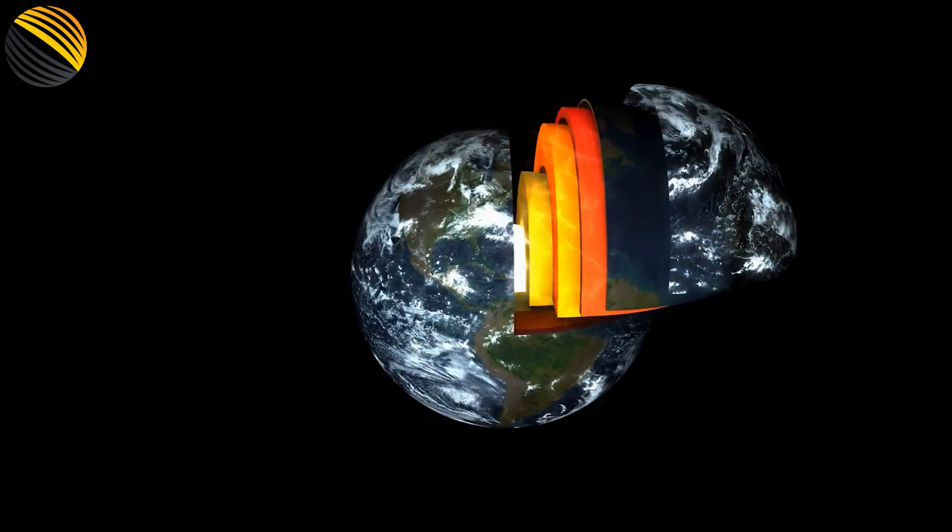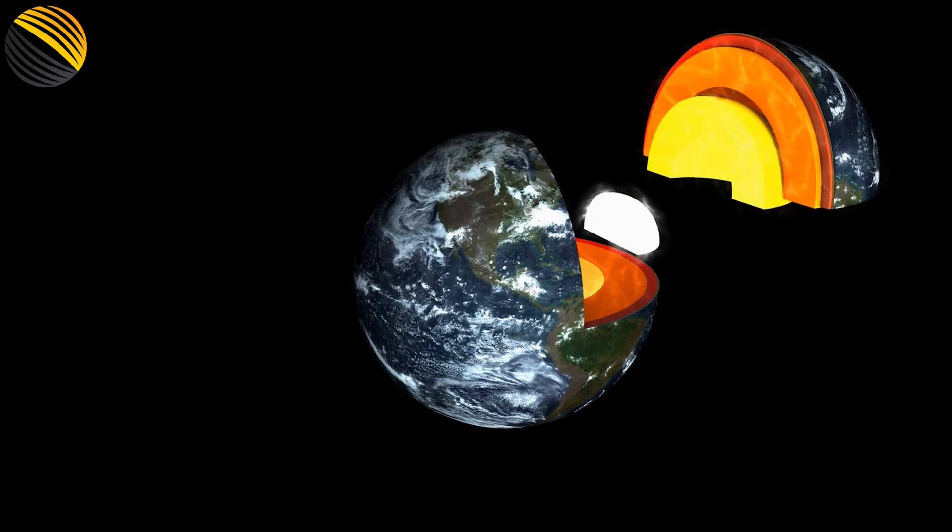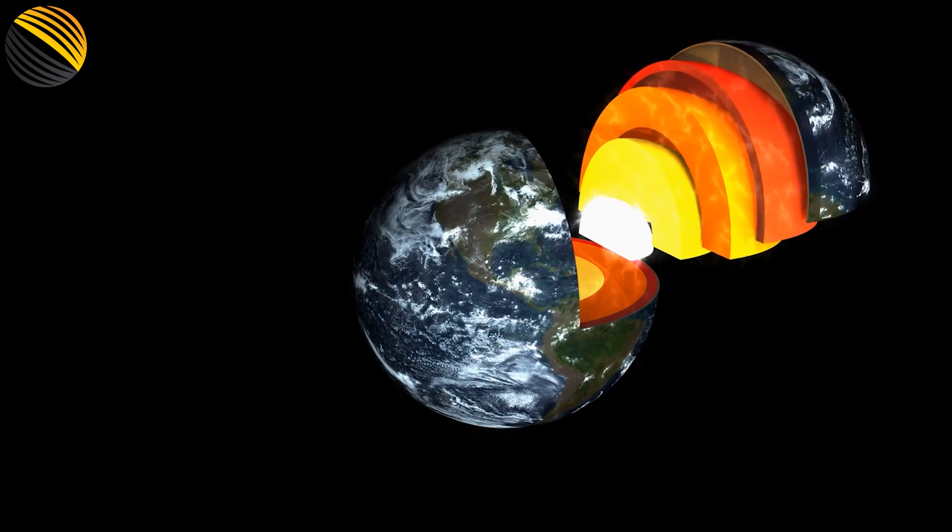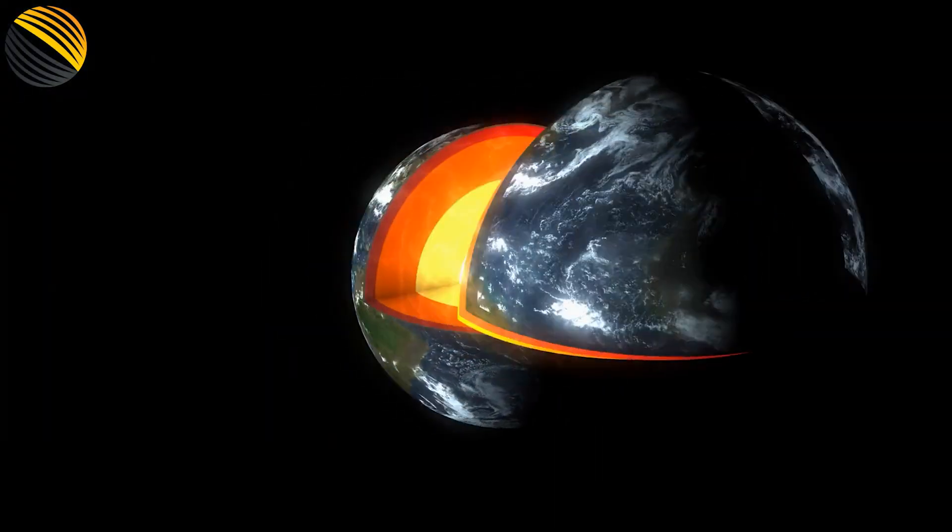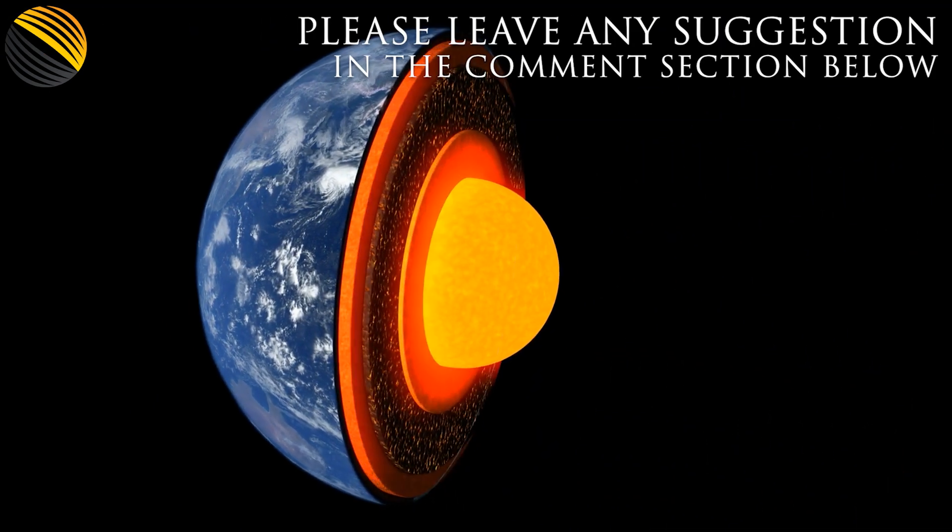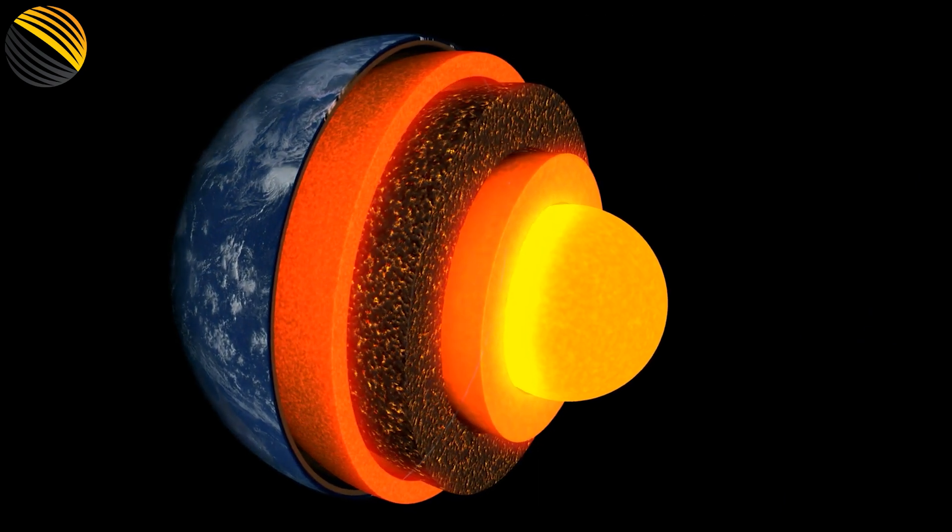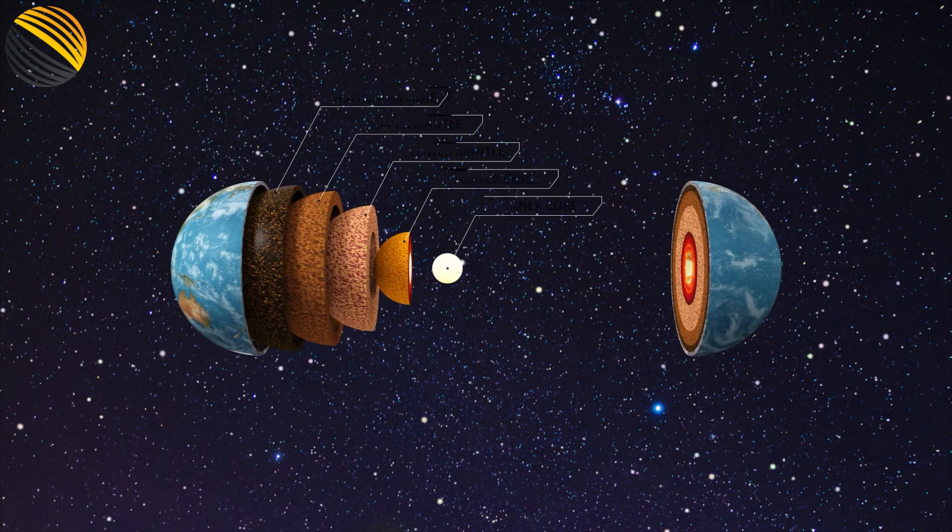The majority of what we know about what lies beneath the crust of the Earth comes from inferences drawn from what volcanoes have shown and what seismic waves have murmured. Based on these indirect measurements, scientists have deduced that the scorchingly hot inner core of the Earth, which reaches temperatures of more than 5,000 degrees, accounts for barely 1% of the entire volume of the planet.